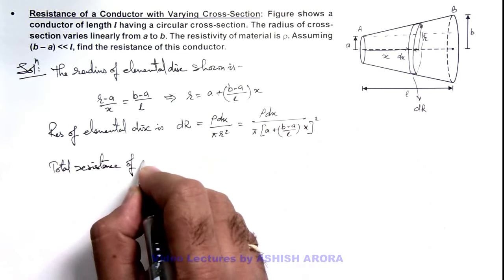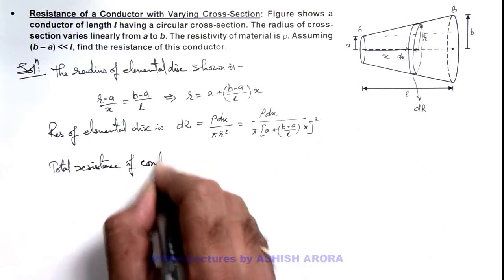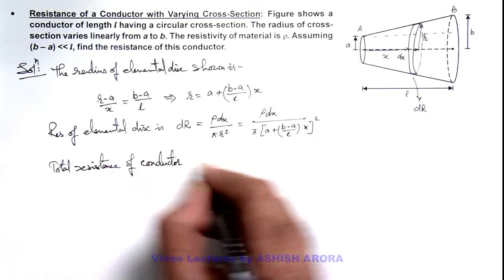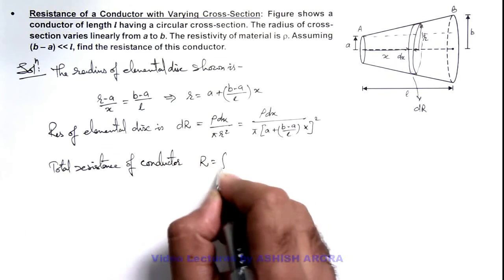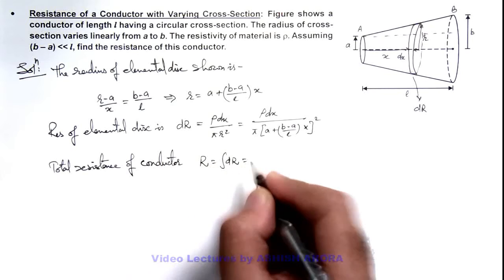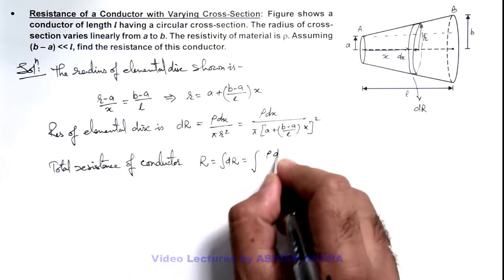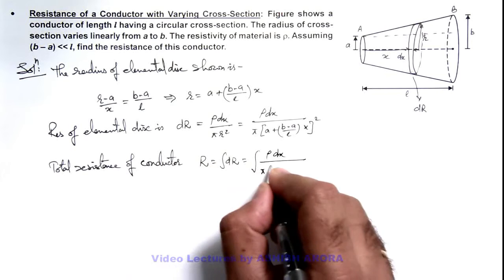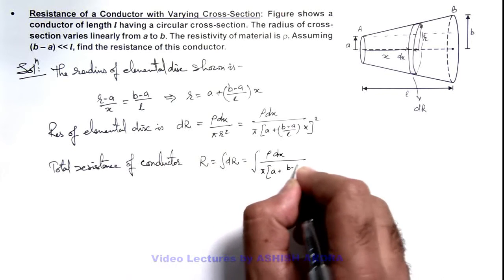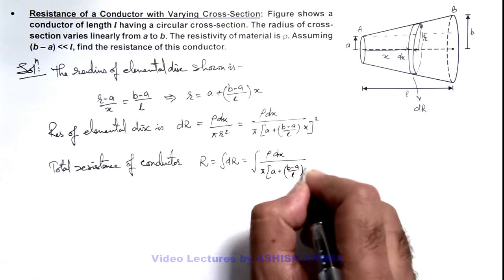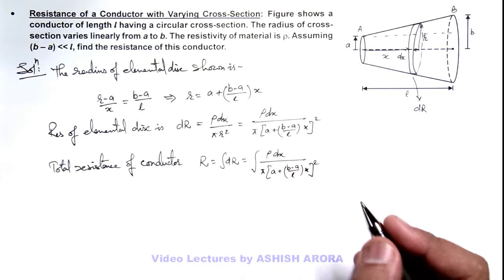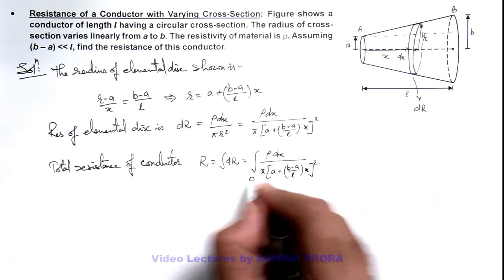The resistance of the conductor here can be given as R, which is the integration of dR, and that can be written as the integration of ρ dx divided by π times [a + (b-a)x/l]². This can be integrated from zero to l.